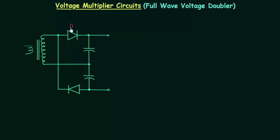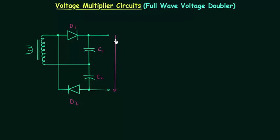This diode is D1, this diode is D2, this capacitor is C1, and this capacitor is C2. We are measuring the output voltage across capacitors C1 and C2, and we call this output voltage Vout. The input voltage we are getting from the transformer is Vin.